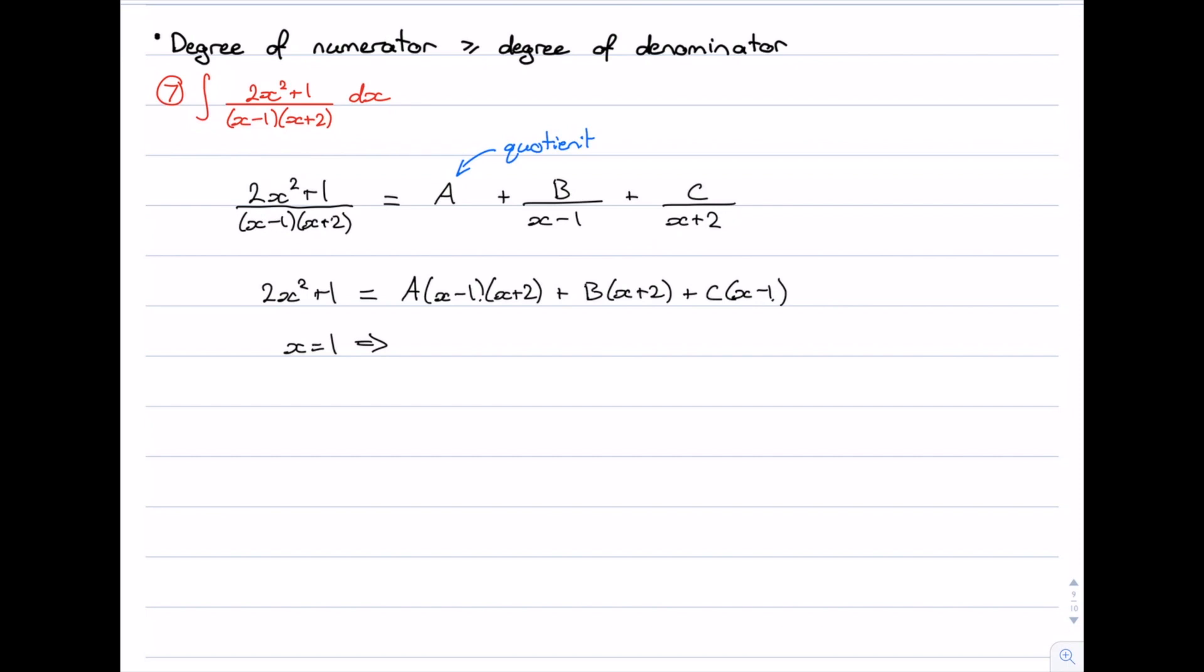If I let x equals 1, the left hand side is going to be 2 + 1, which is 3. On the right hand side, the first term involving A is going to become 0. The last term involving C will become 0. And I'm left with B times 3, which means that B is equal to 1.